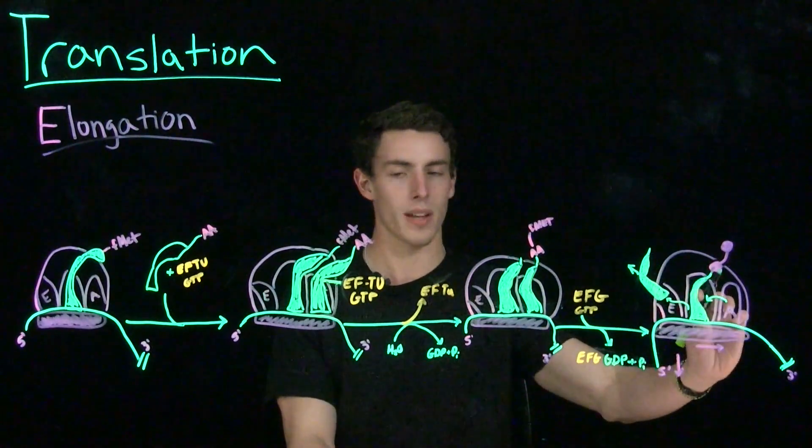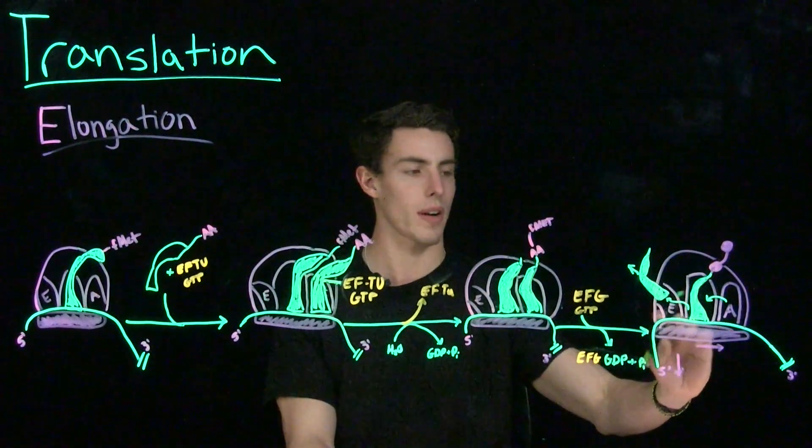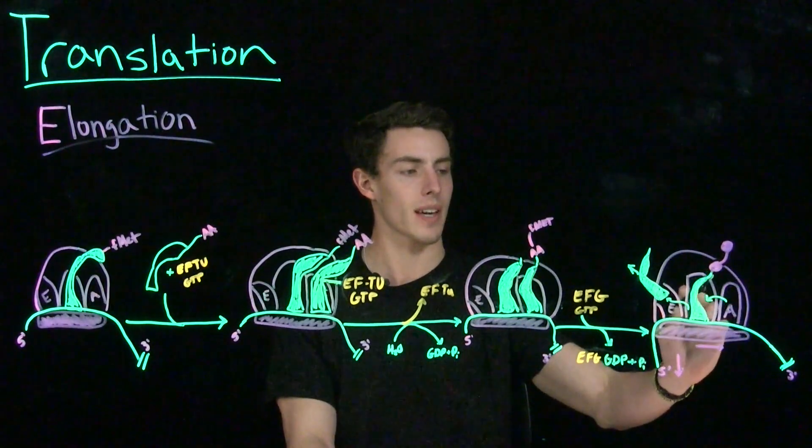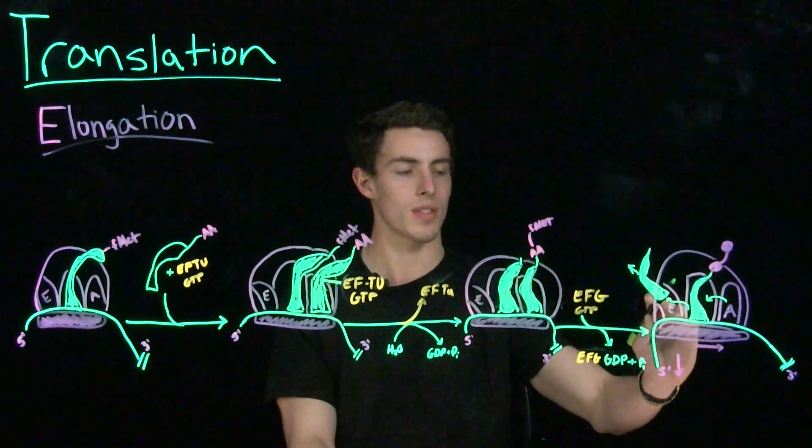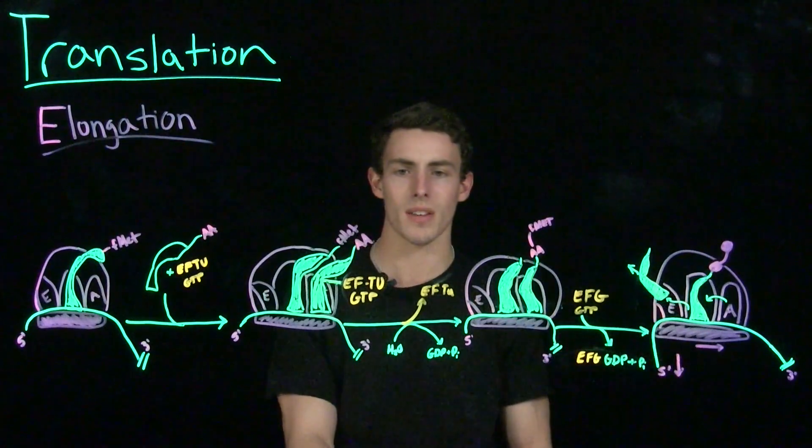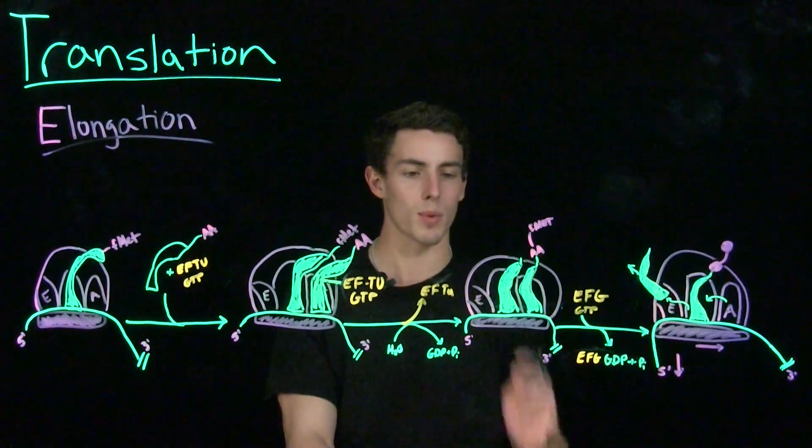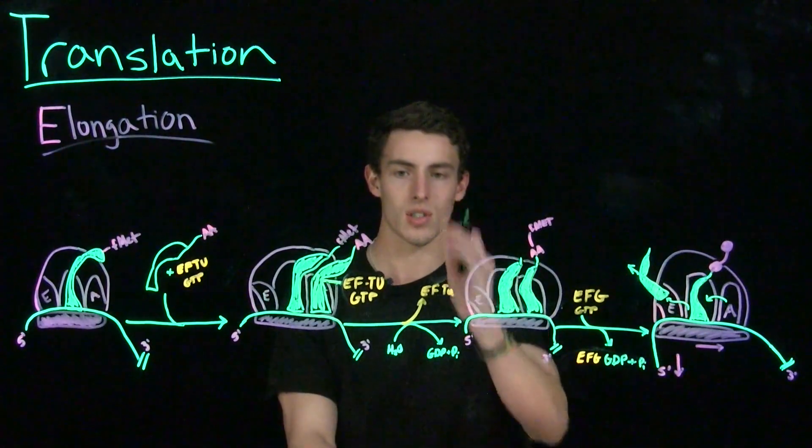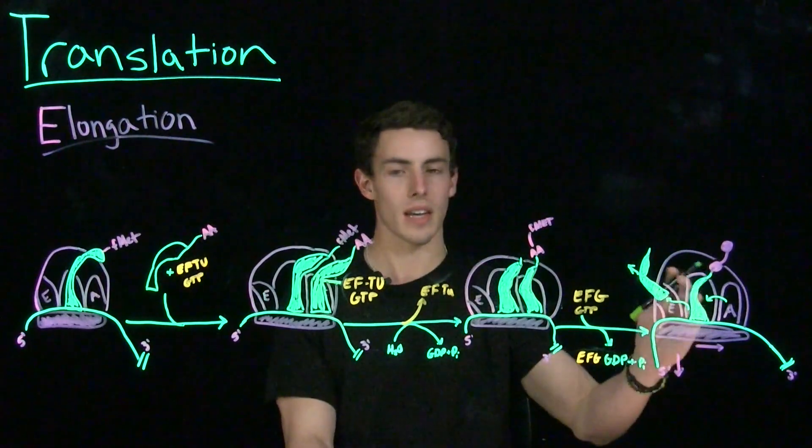As that ribosome translocates along the length of the mRNA, anything from the A site will move to the P site, and anything from the P site will move to the E site. And there's really nothing that stays in the E site. When something moves from the P site into the E site, it's just ejected out of the ribosome.